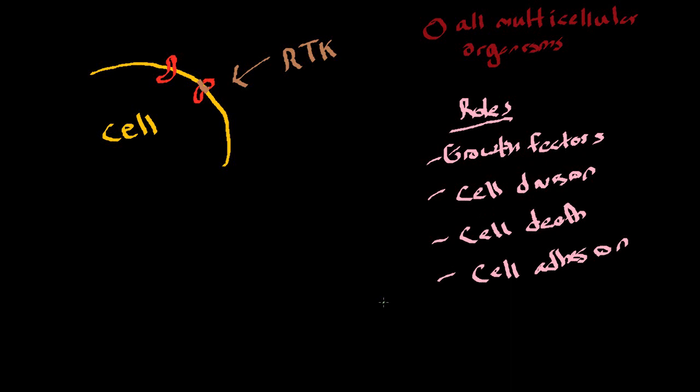Now the thing that is rather peculiar about these types of receptors is that they bind as a dimer. What do I mean by this? Well, let's say we had a ligand of some sort. There are two ways at which this can occur. I'll show you the first.